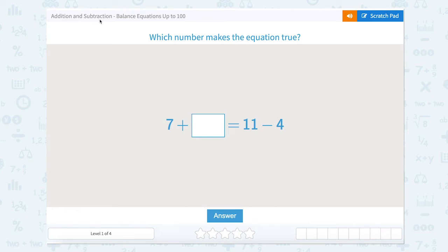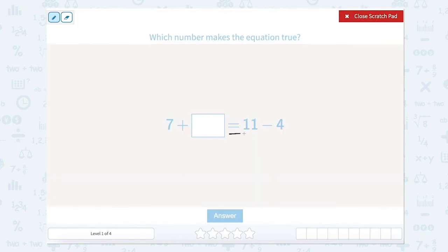Let's work on addition and subtraction, balance equations up to 100. What number makes this equation true? Something I learned was that the equal sign is a lot like a teeter-totter, which means that this side of the equal sign has to be equal to this side of the equal sign. If not, well then they're not equal. So to solve this problem we need to look and see make sure that this side will equal this side. Since we have a missing number here, let's solve this side of the equation first.